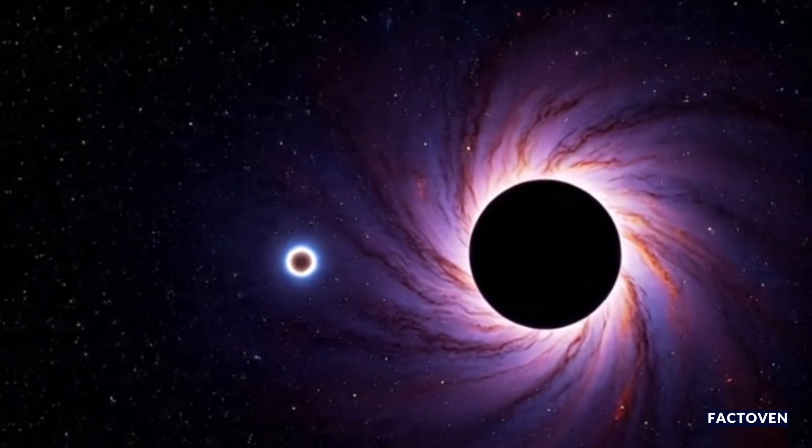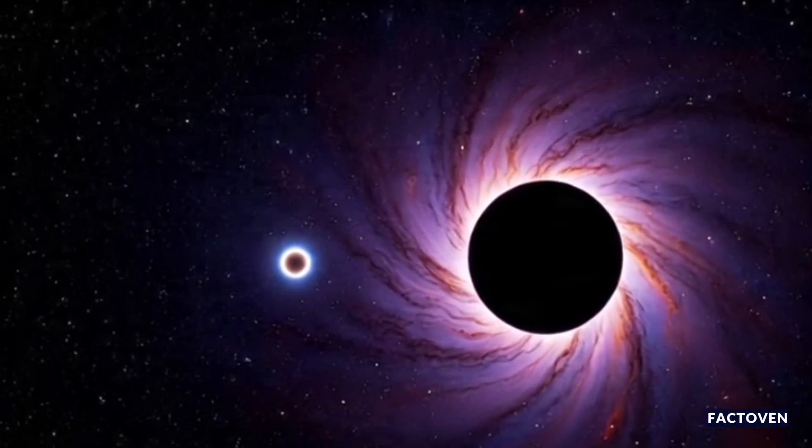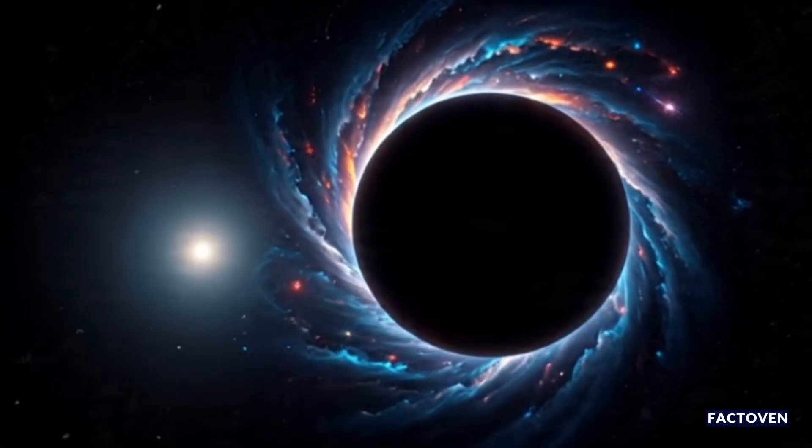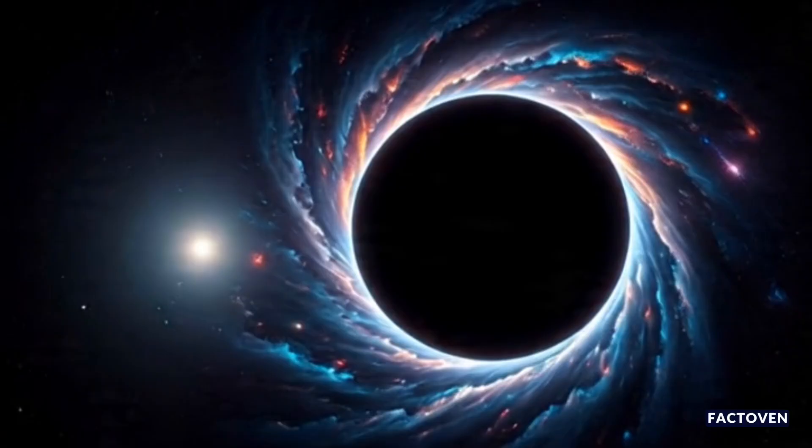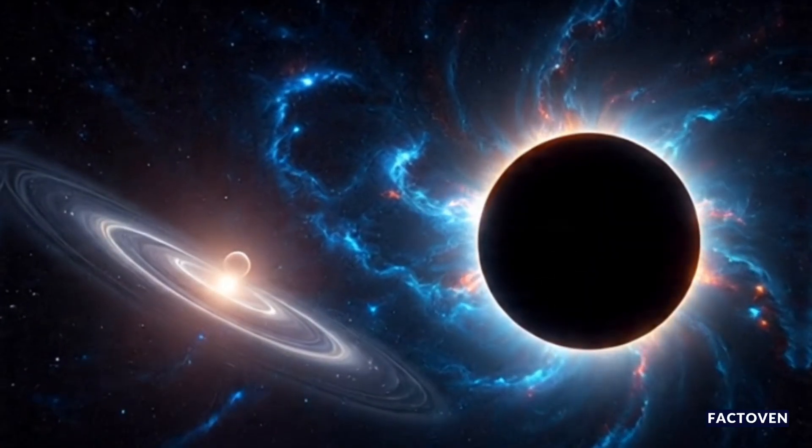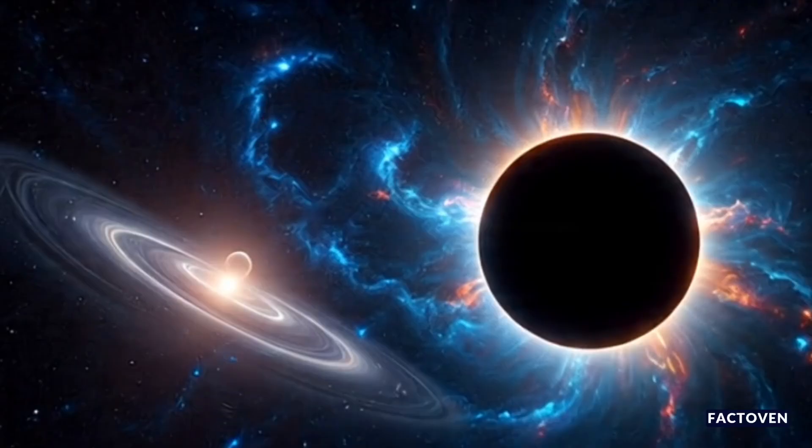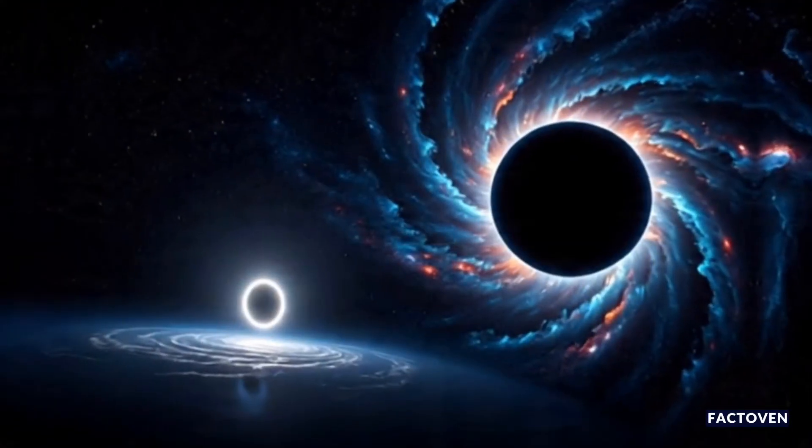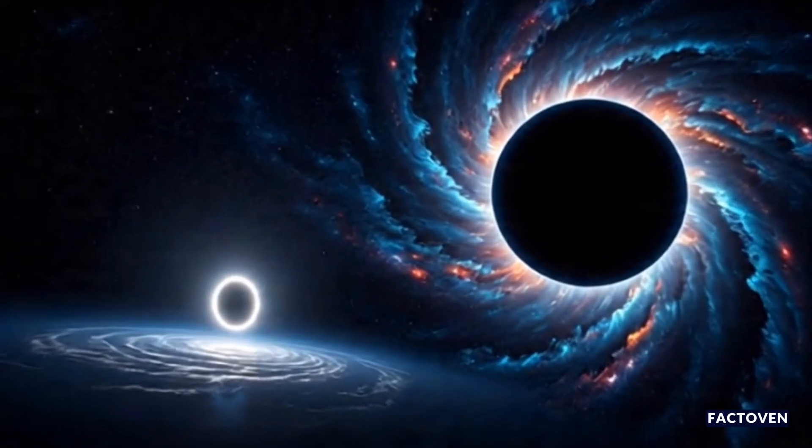But one particular event from 2019, known as GW190814, has puzzled scientists for years. In this event, one black hole was unusually small, just 2.6 times the mass of our Sun, right on the borderline of being a neutron star.